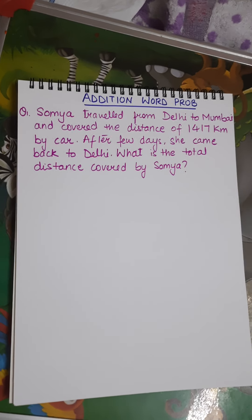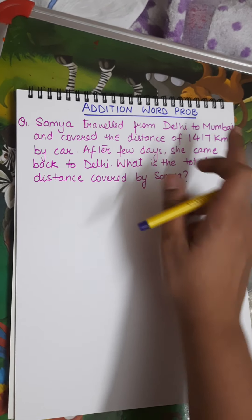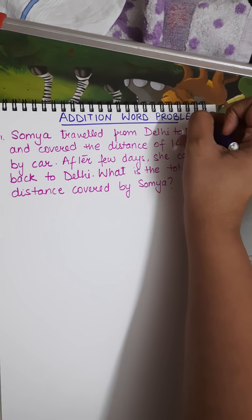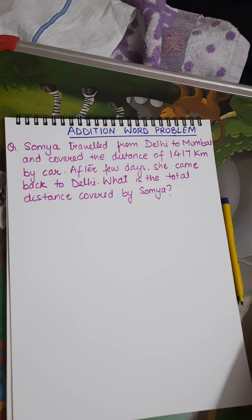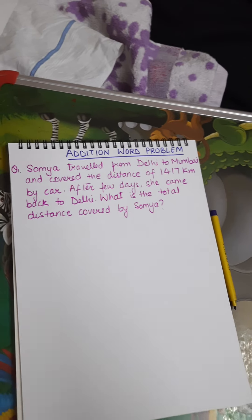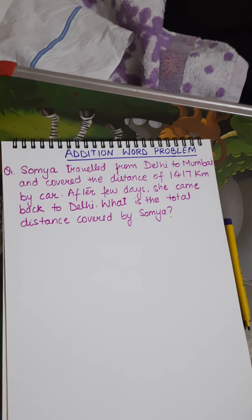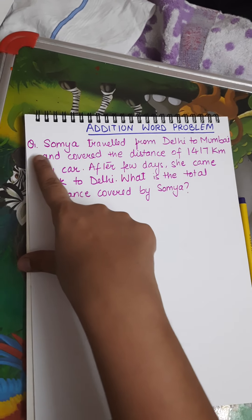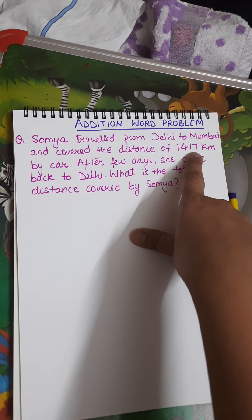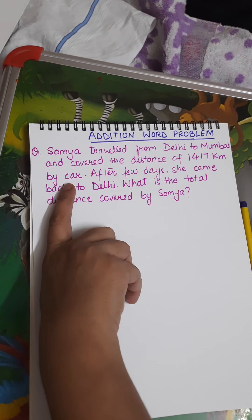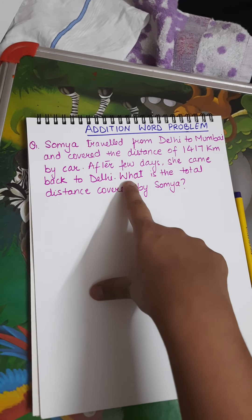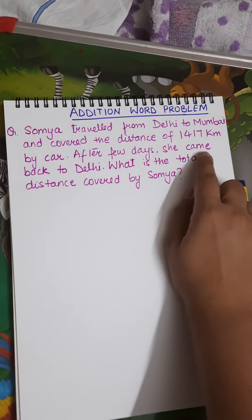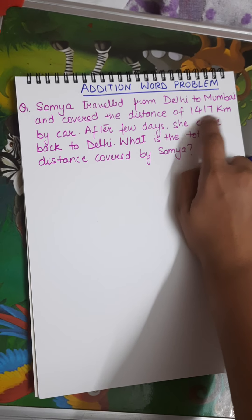Welcome back to another addition word problem. In the last two videos I told you about numbers and quantities. Now in this question: Somya traveled from Delhi to Mumbai and covered a distance of 1417 kilometers by car. After a few days she came back to Delhi. What is the total distance covered by Somya? The main point I want to discuss is that Somya covered the distance of 1417 kilometers.